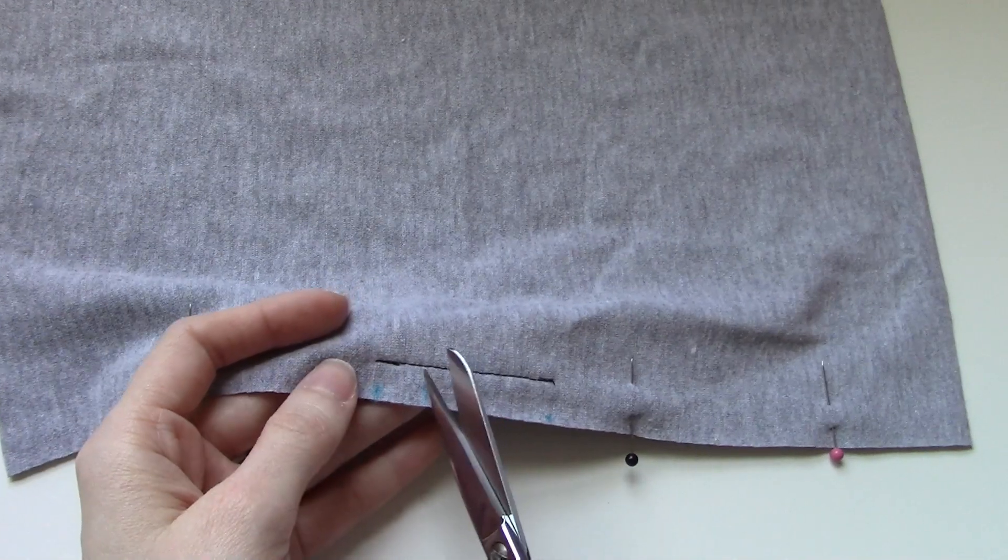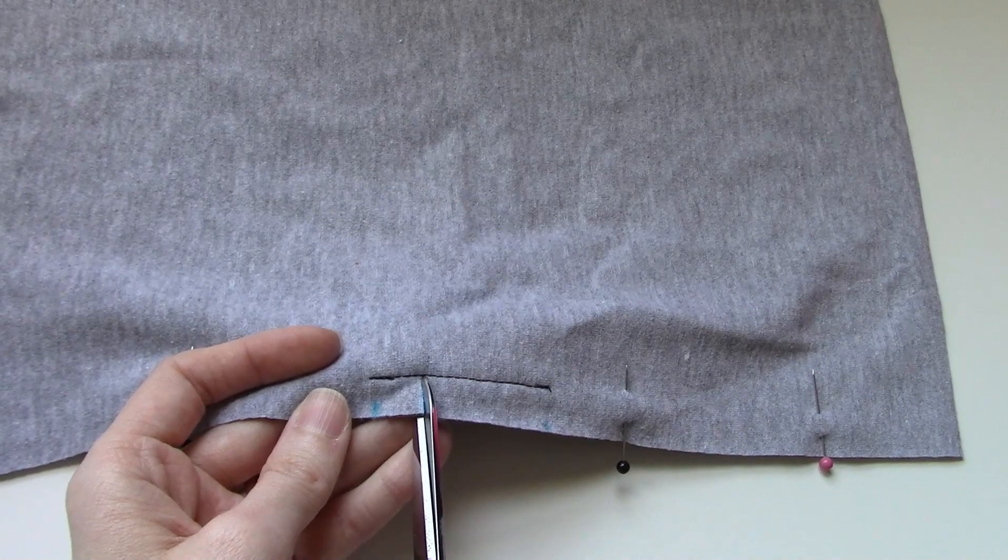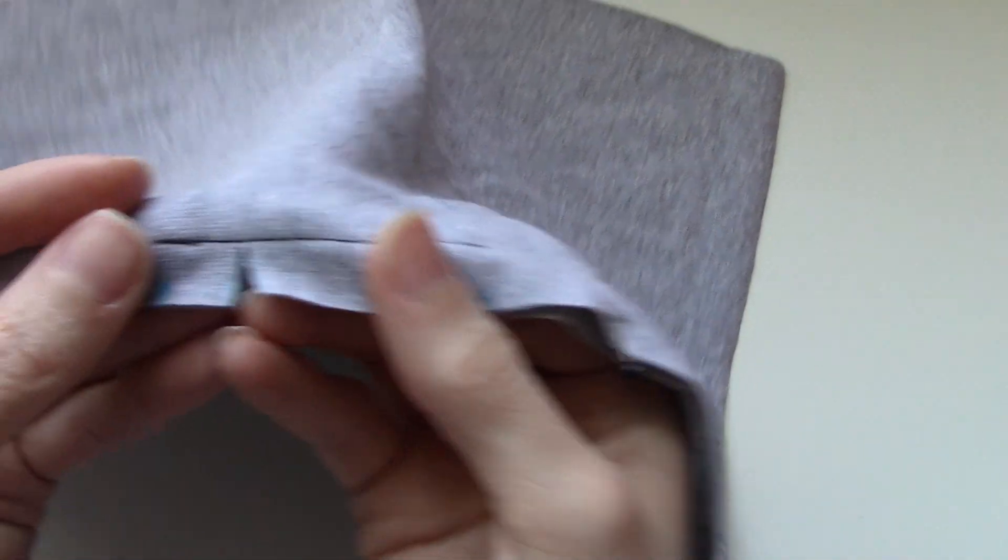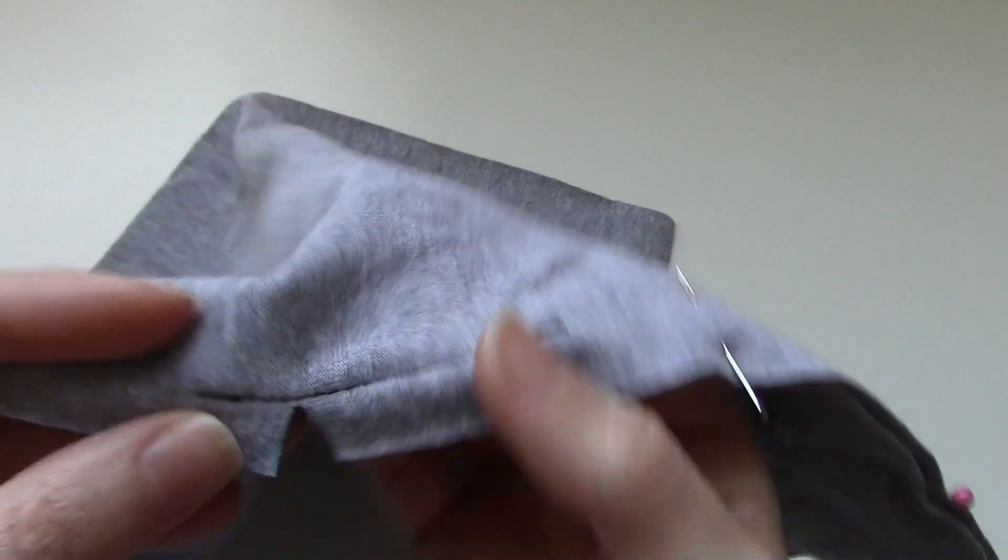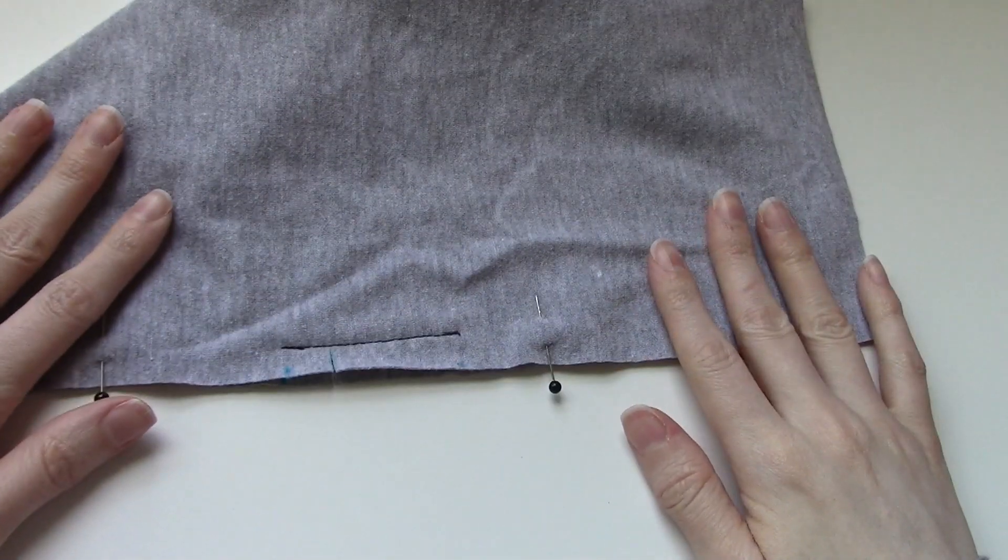So once you have that half inch mark up there, you're going to want to snip in, up to, but not through the stitches you just made there. So get close as close as you can even. But don't actually snip into the stitches. That is not what we want. So that's where we're at here.